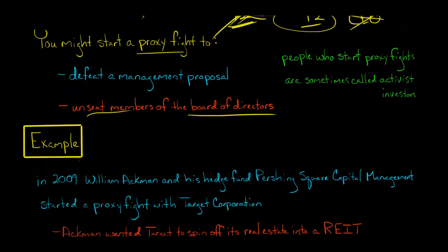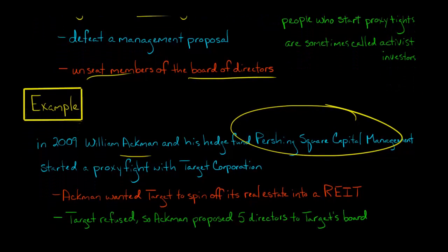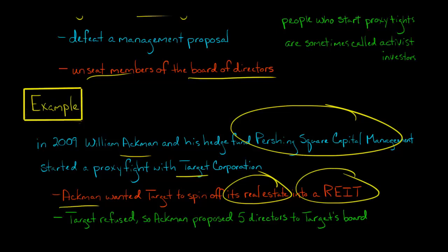So a real life example, William Ackman and this hedge fund that he started, Pershing Square Capital Management, they started a proxy fight with the retailer Target. And so basically what happened, Ackman wanted a number of changes. And one of the things was the real estate. So Target's retail stores, they sit on top of land. And basically he wanted that land to be spun off into a real estate investment trust. And Target didn't want to do it.